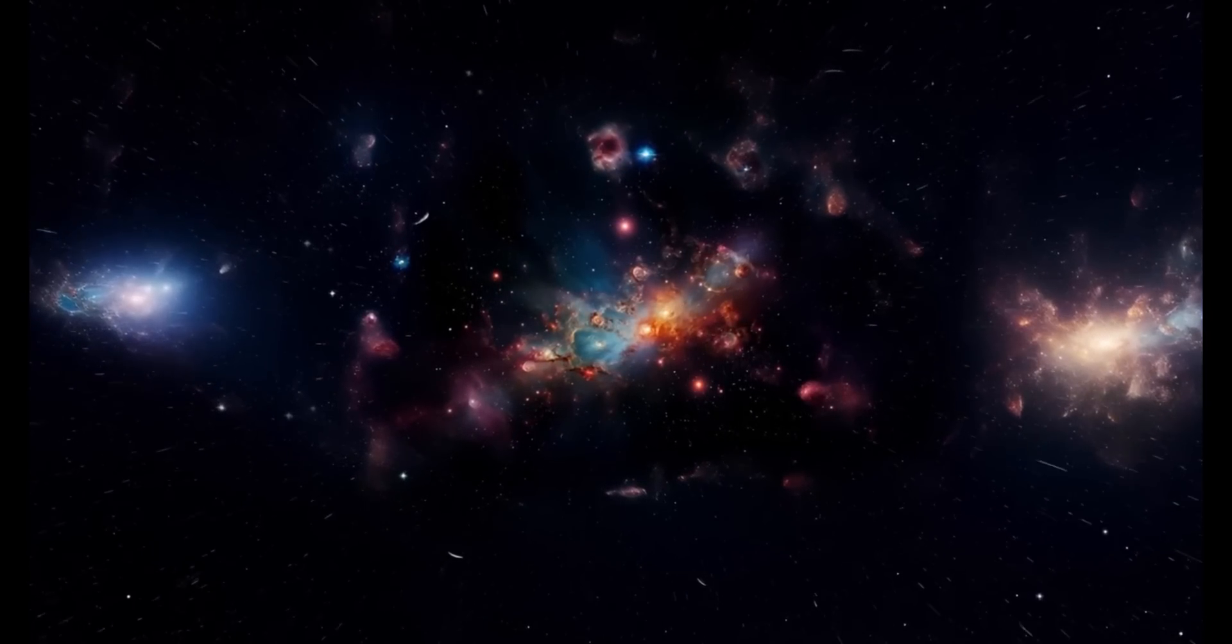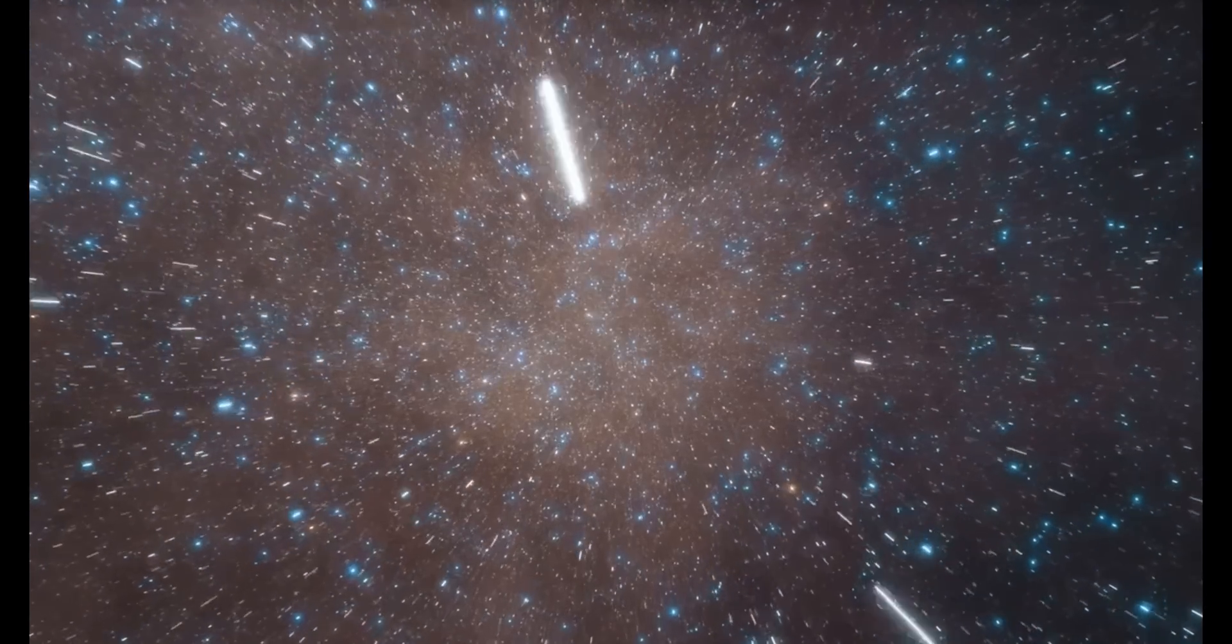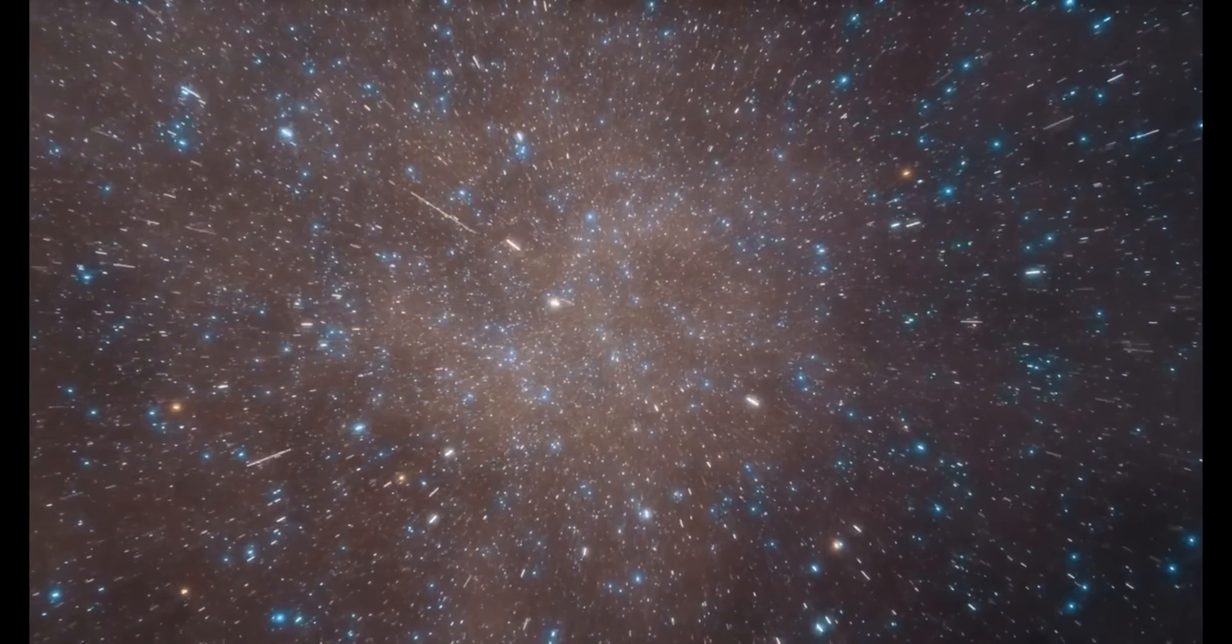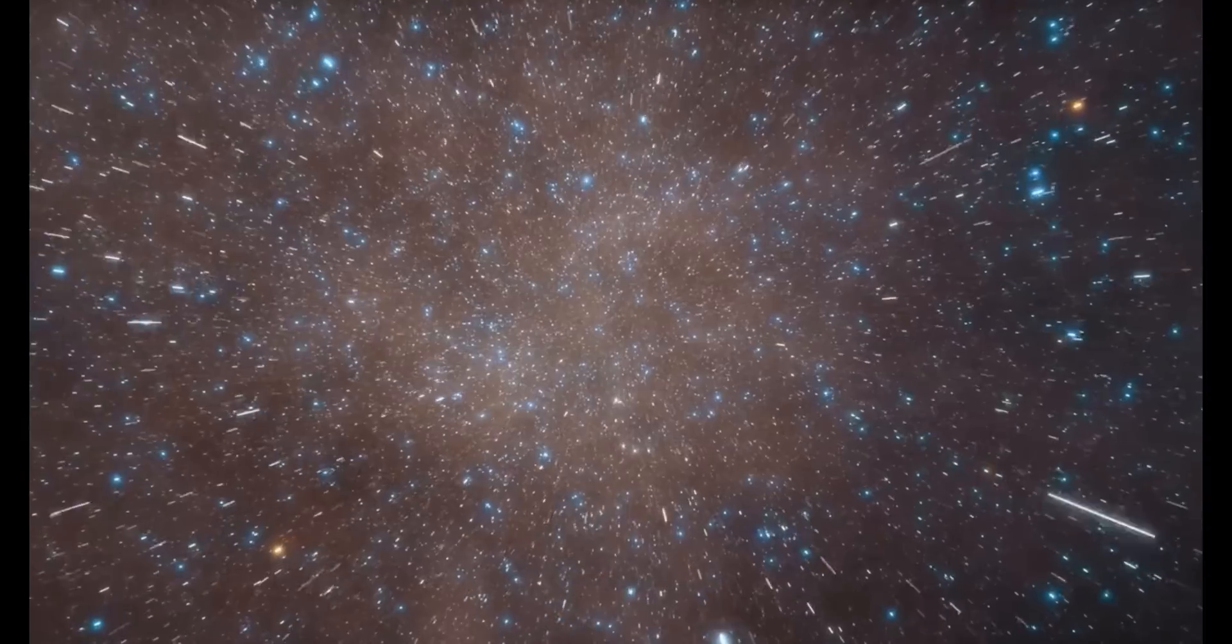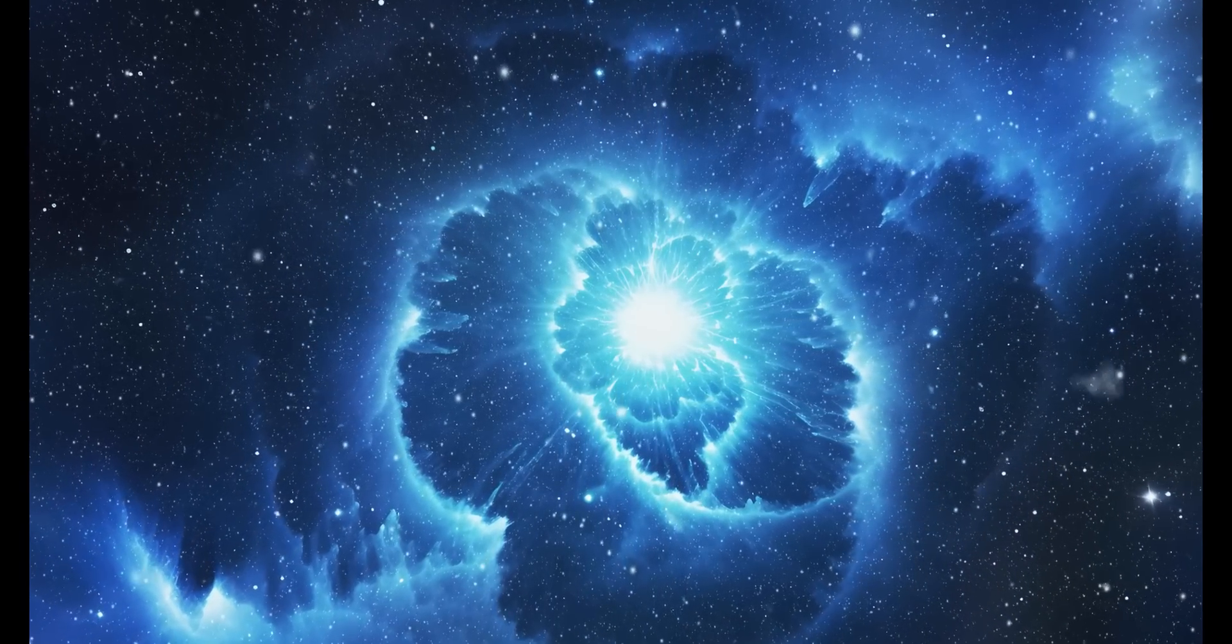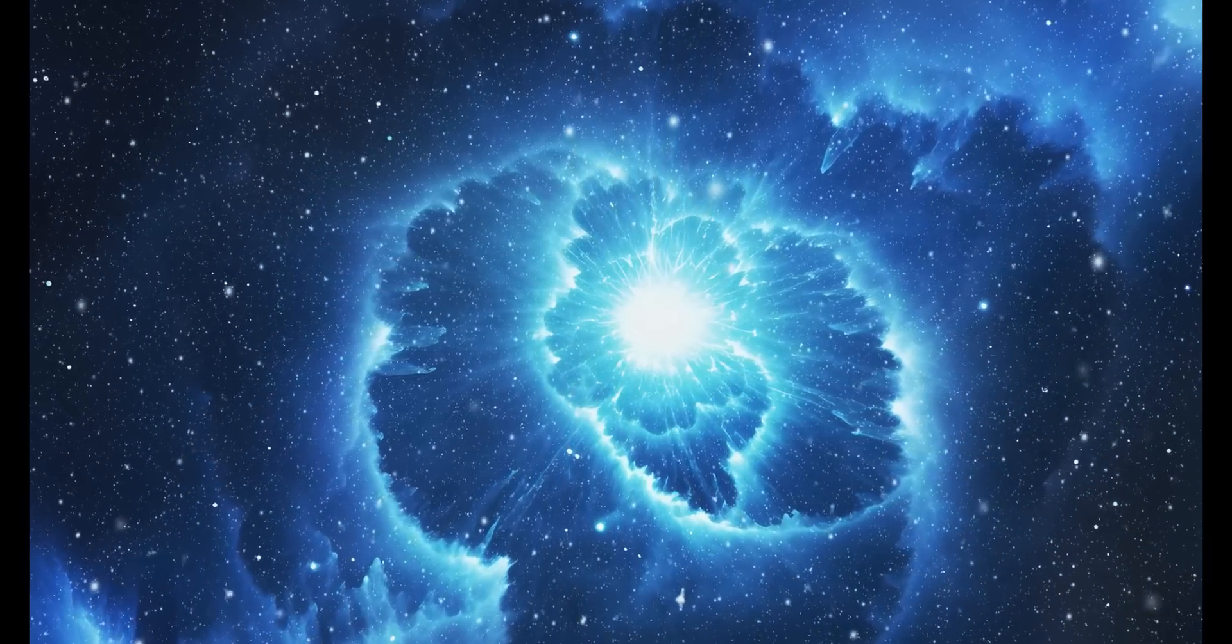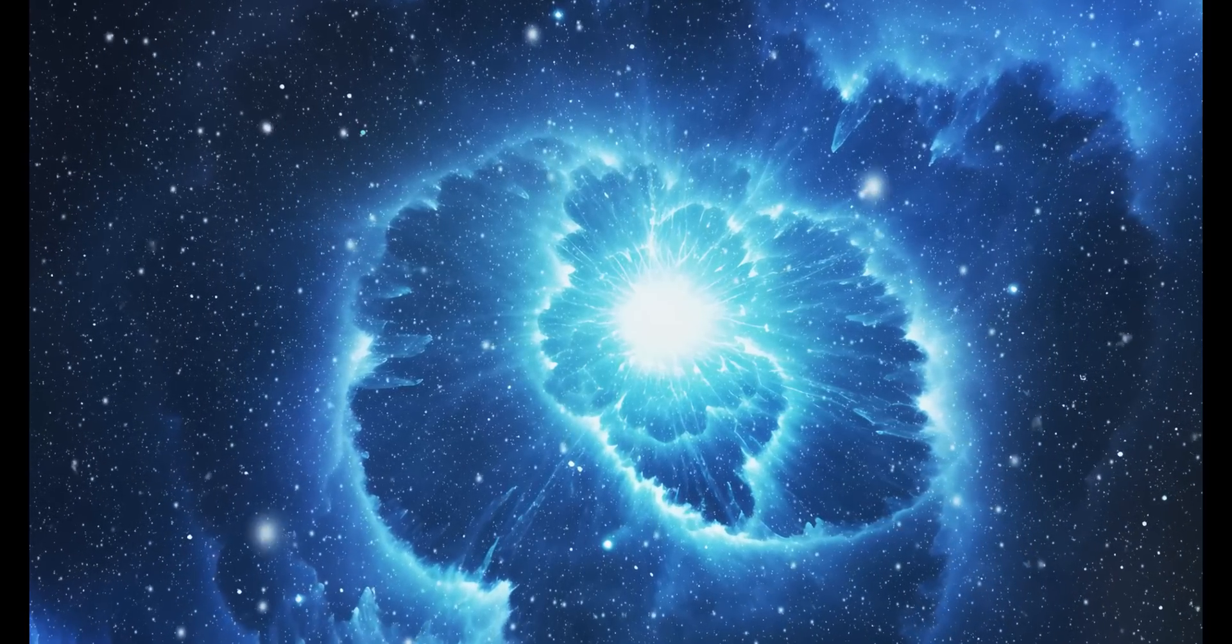You may wonder why we can't just see everything that exists in the universe. There are several reasons for this limitation. First and foremost, light, the fastest thing in the universe, still takes time to travel through space. This means that when we look at distant objects, we're essentially looking into the past. The farther an object is, the more its light has traveled to reach us. It's like looking through an infinite time machine, unwinding the history of our universe.